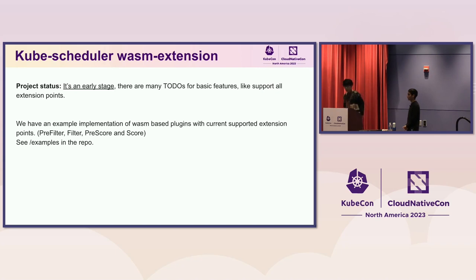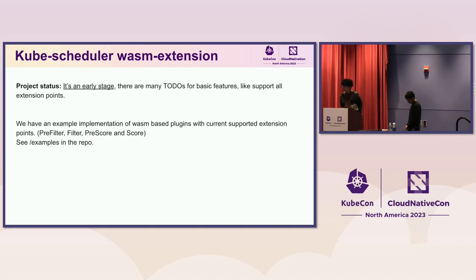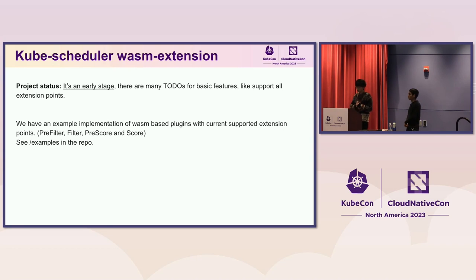As for current status, it's in an early stage and there are many things to do. It currently only supports common extension points such as pre-filter, filter, pre-score, and score, and we'd like to see all extension points supported as soon as possible. There are some WASM peculiar limitations we don't have time to detail, but hopefully we'll share more knowledge around this. We currently have some example implementations of WASM-based plugins in the repository, so you can go and see what's there.